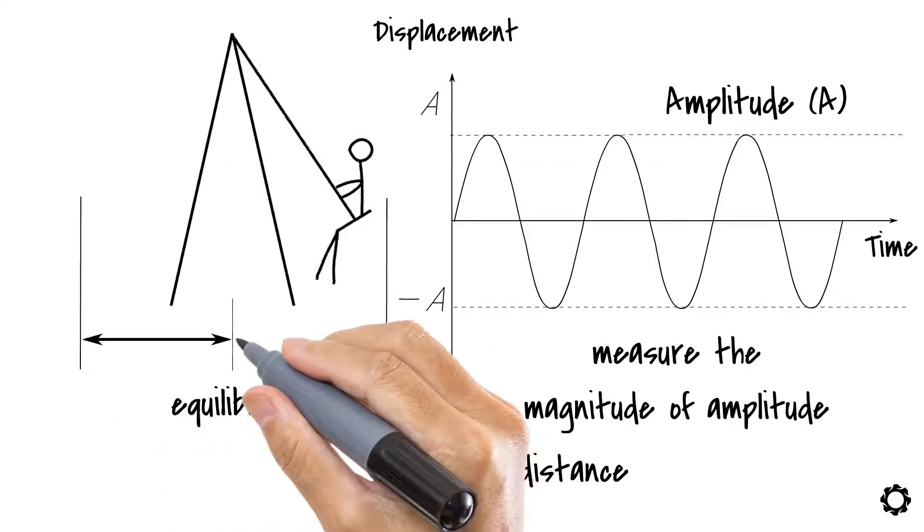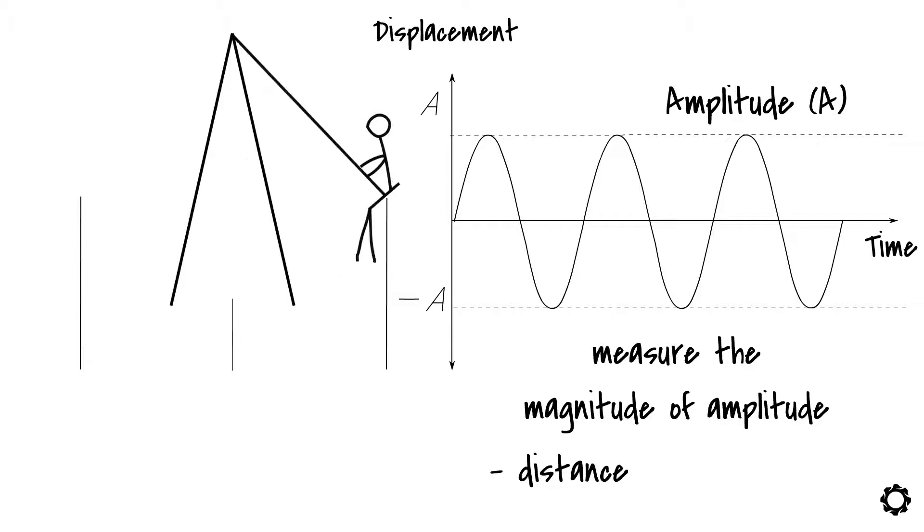We could also use another quantity to measure amplitude, such as velocity of the swing, because its magnitude also changes while the swing is moving back and forth.